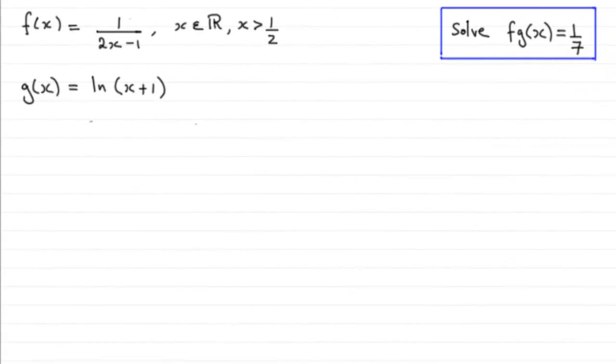Now for this last part, we're given a new function, g of x equals the natural log of x plus 1, and we already have f of x equals 1 over 2x minus 1. We've got to solve f∘g of x, this combined function, equaling 1/7, giving our value of x in terms of e.